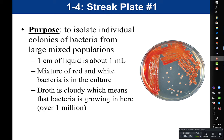When we do our streak plate, we do what's called a quadrant streak plate. The plate is divided up into four quadrants — one, two, three, and four. Quadrant one has the most bacteria, quadrant two has a little bit less, quadrant three has even less, and by quadrant four we have our isolated individual colonies. The goal is that for each subsequent quadrant, we want to get less and less bacteria until eventually we get isolated colonies.